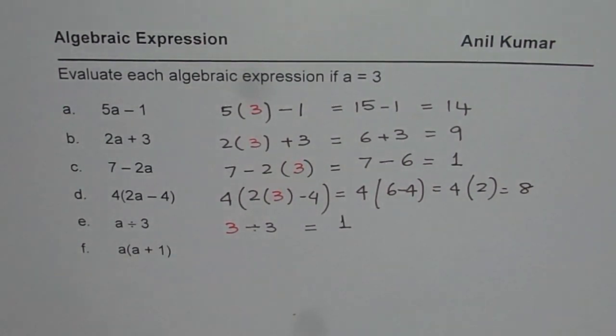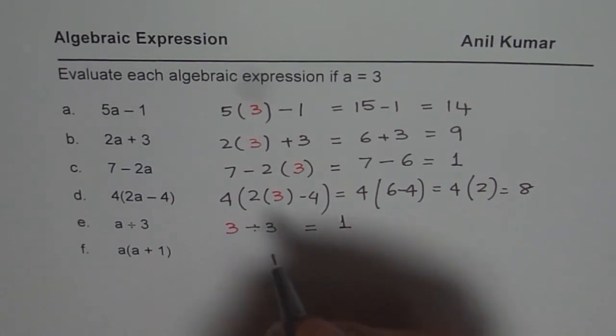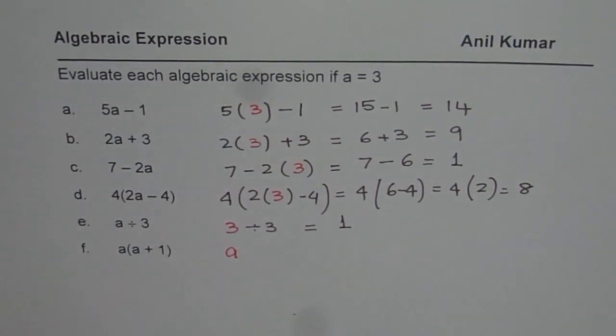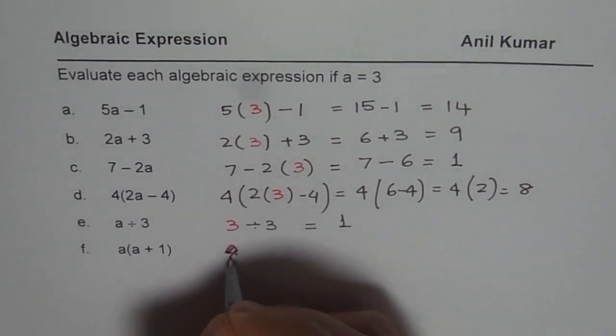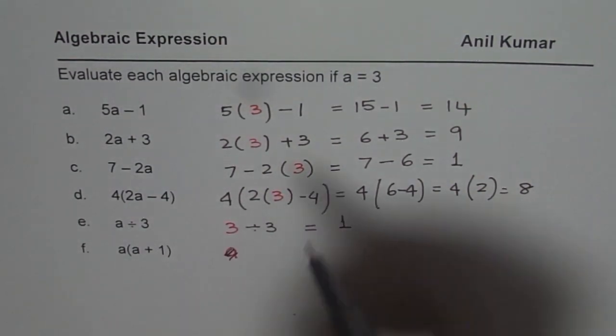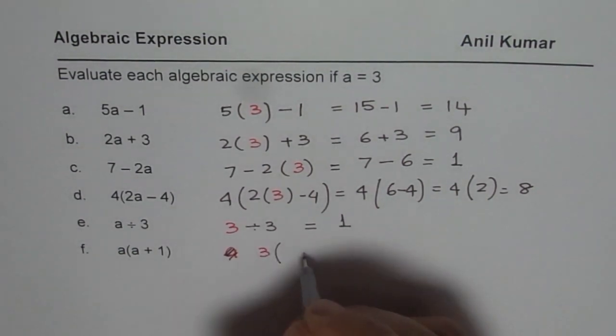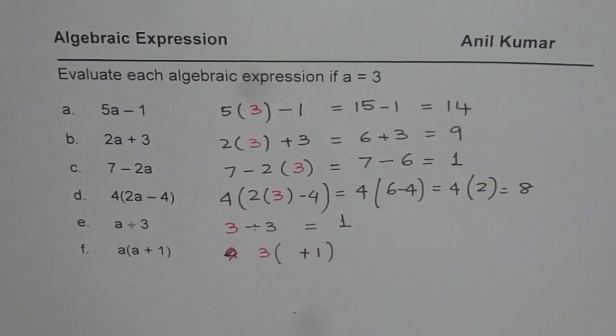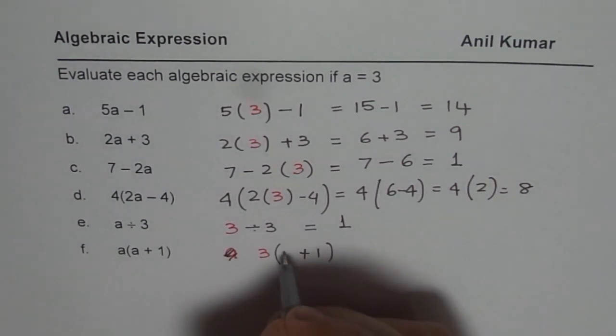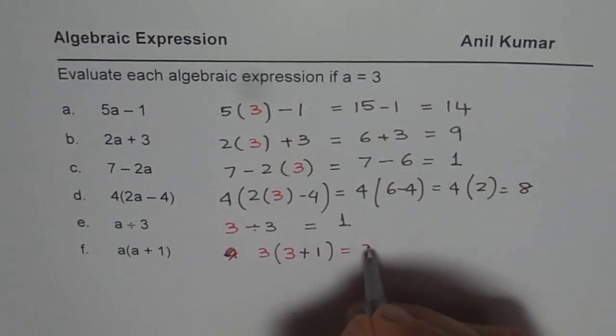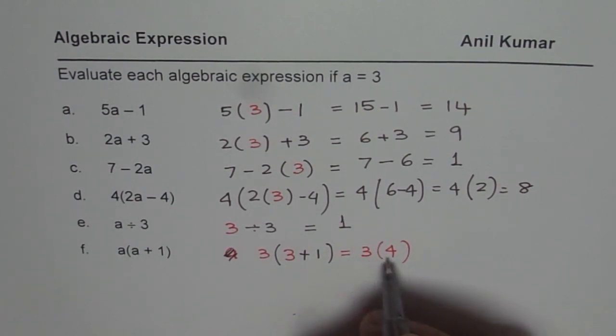The next one is the product of consecutive numbers a and a plus 1. See how we get these consecutive numbers. I should substitute 3 for a. So I substitute 3 for a, giving me 3, and within brackets, I need to write 3 plus 1. For a, I substitute 3. So what do I get? I get 3 times, and 3 plus 1 is 4. So 3 and 4 are consecutive numbers. They come after one another.